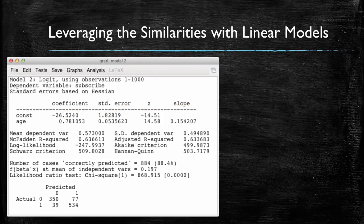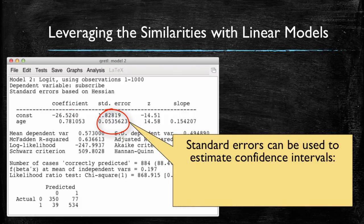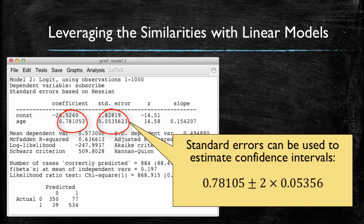We also have at our disposal the standard errors, and as we did with linear models, we can use the standard errors to compute confidence intervals for the coefficients. In the case of age, we have that the coefficient is 0.781, so we can add and subtract 2 times the standard error of 0.0535, and we end up with the confidence interval for the slope of age that goes from 0.674 to 0.888.